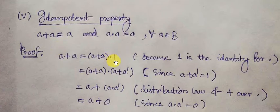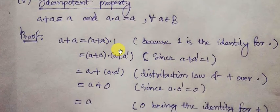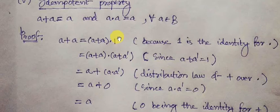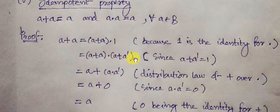We shall now prove A plus A equals A. Starting with A, we can write A equals A plus A into 1, since 1 is the multiplicative identity element. Also, from the complementation property, we know A plus A-complement equals 1. So in place of 1, we write A plus A-complement, giving us A plus A into A plus A-complement.